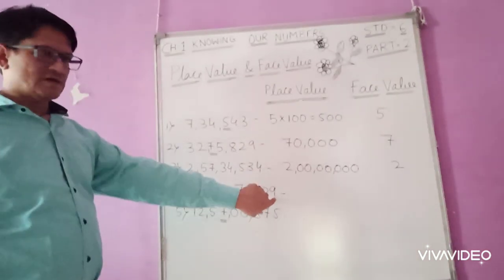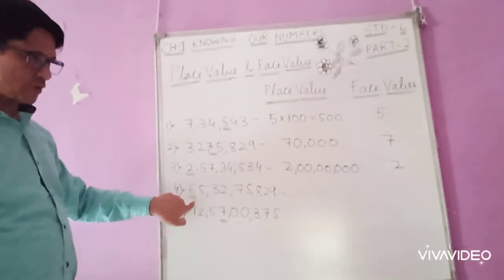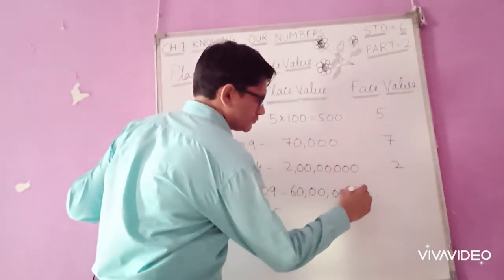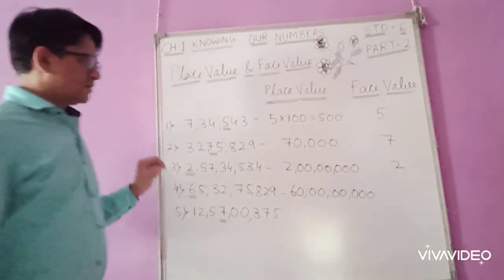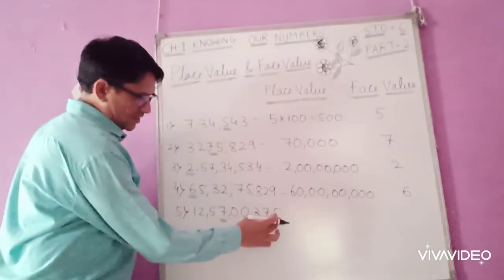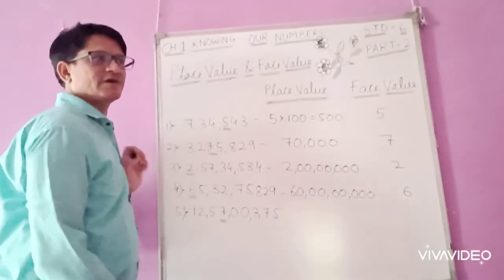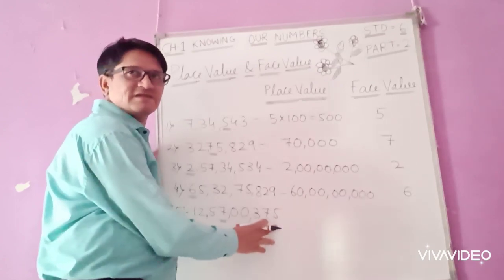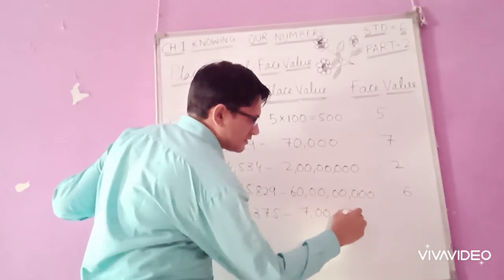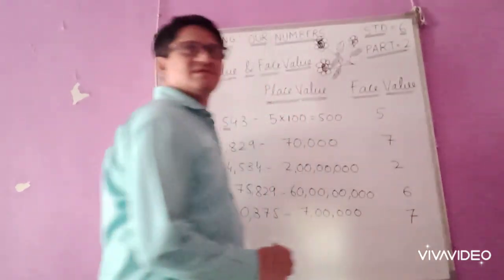Continuing the place value examples: if a digit is in the crores place, count the digits after it — here after 7 there are five digits, so 7 is in the ten lakhs place, giving a place value of seventy lakhs. The face value of 7 remains 7.